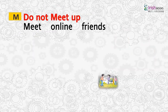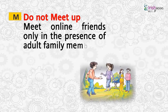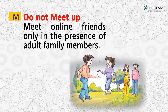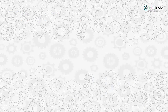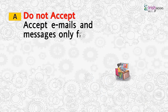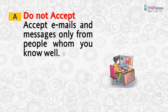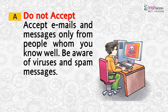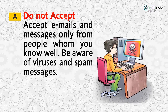M: Meet — do not meet online friends except in the presence of adult family members. A: Accept — accept emails and messages only from people whom you know well. Be aware of viruses and spam messages.